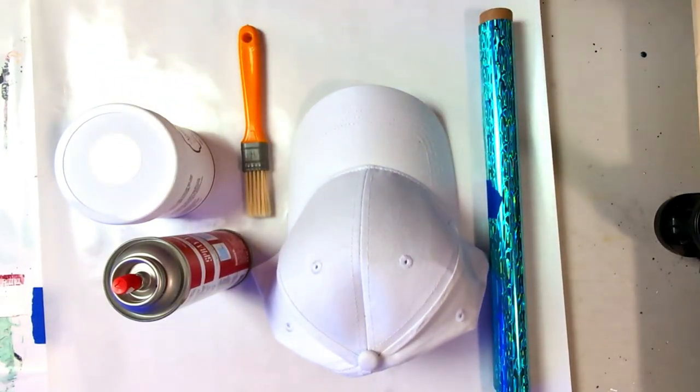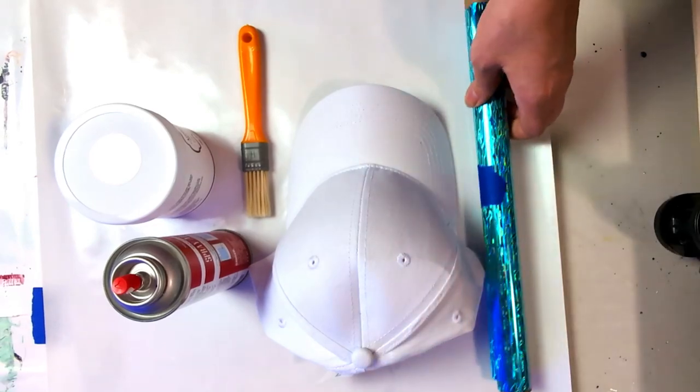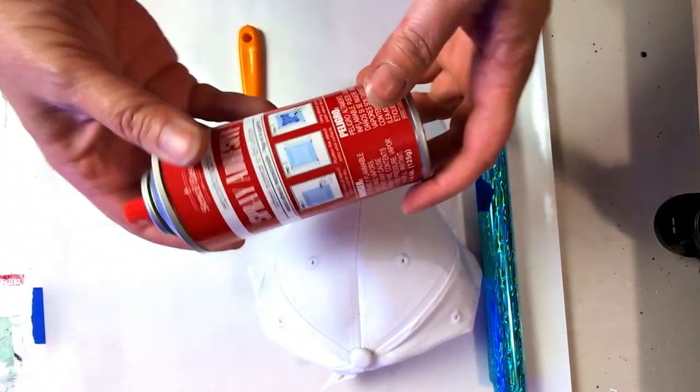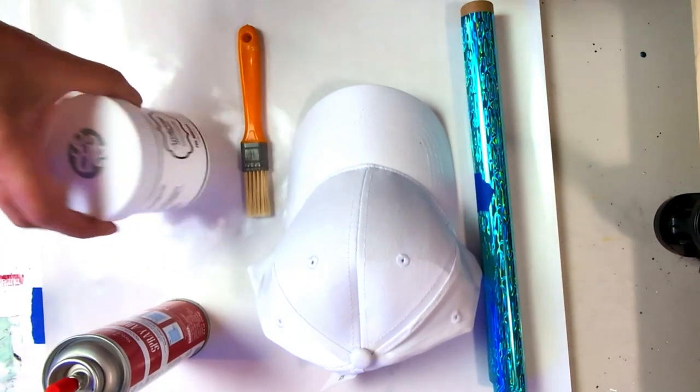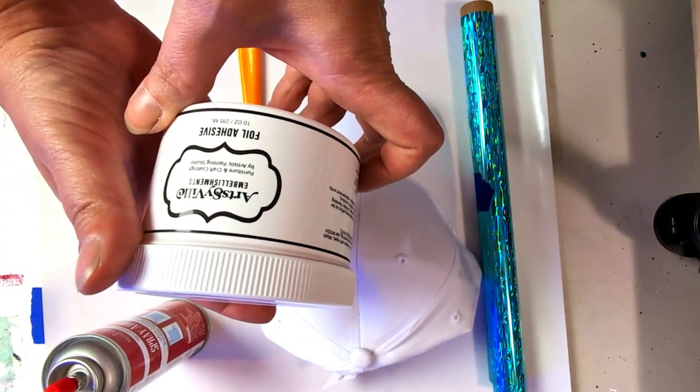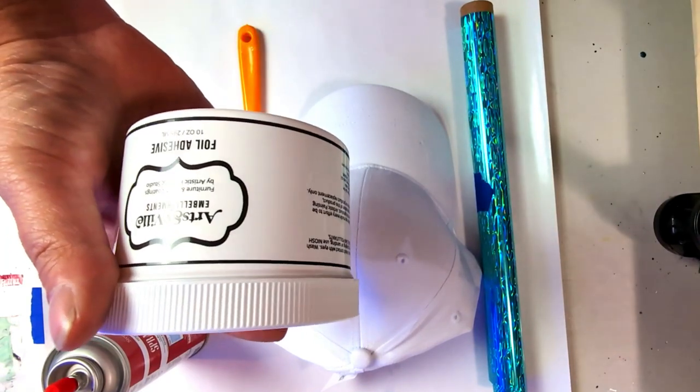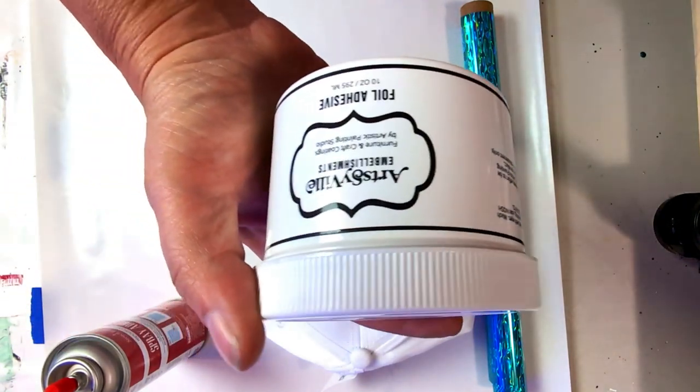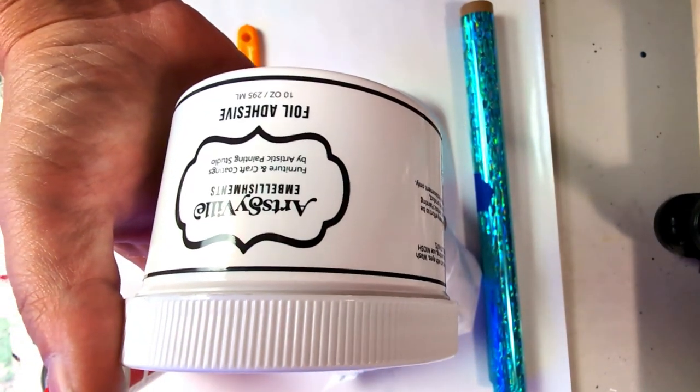Things you will need are the cap, the metallic foil, some spray adhesive, and Artsyville embellishment that is also from the Artistic Painting Studio.